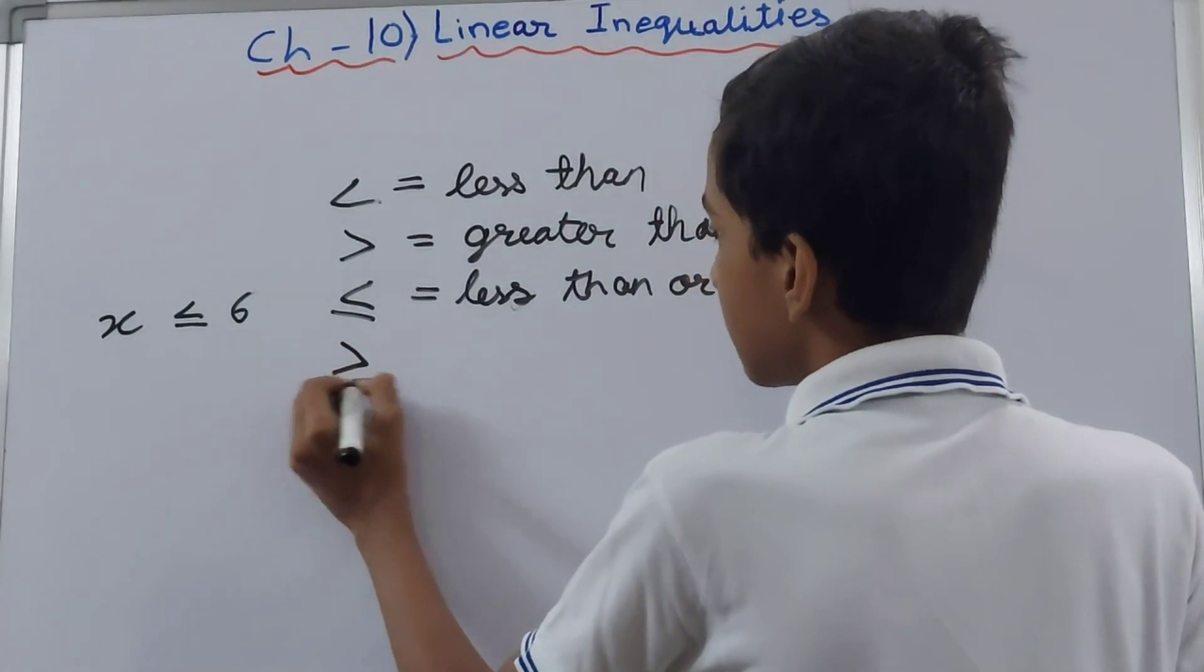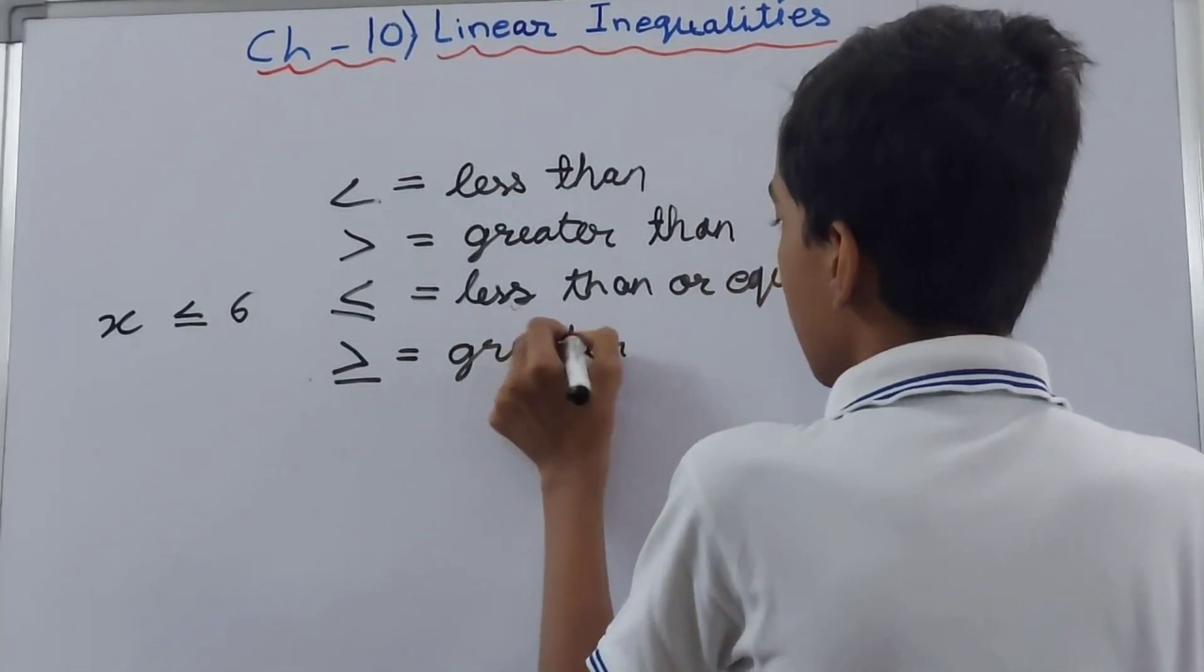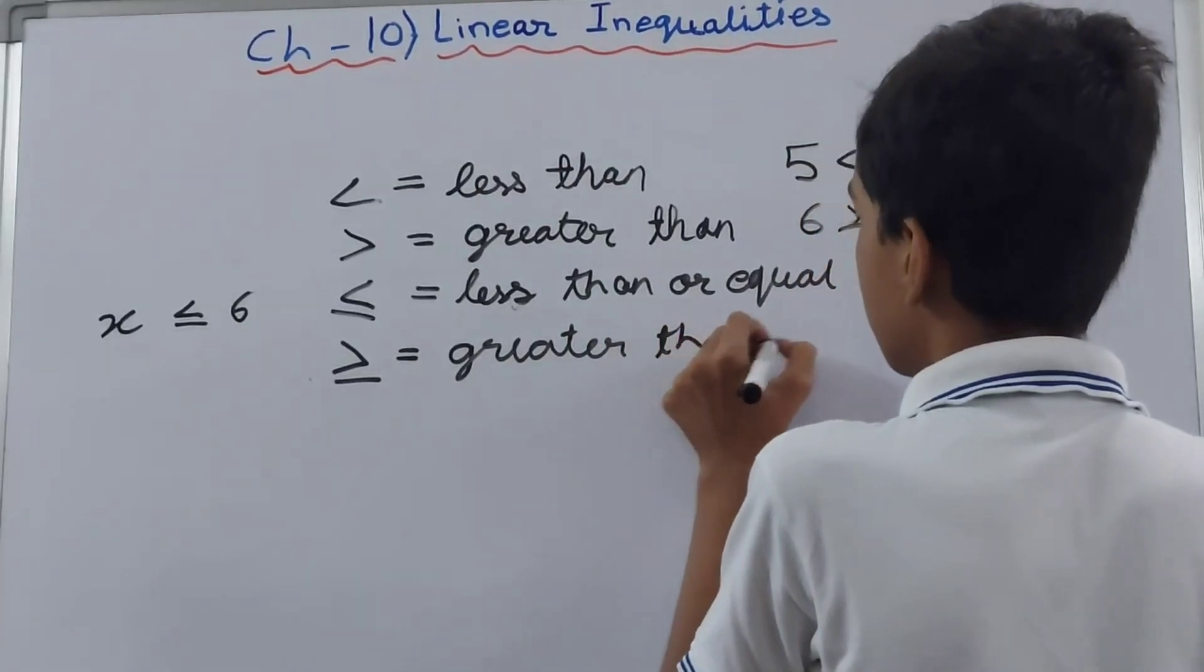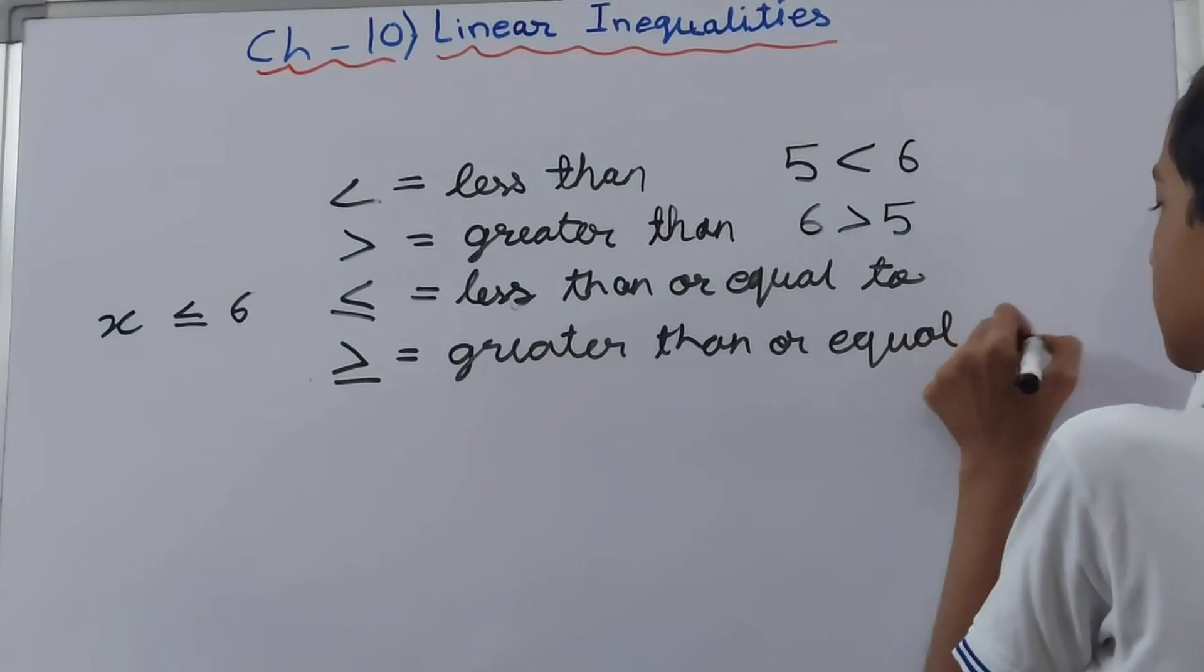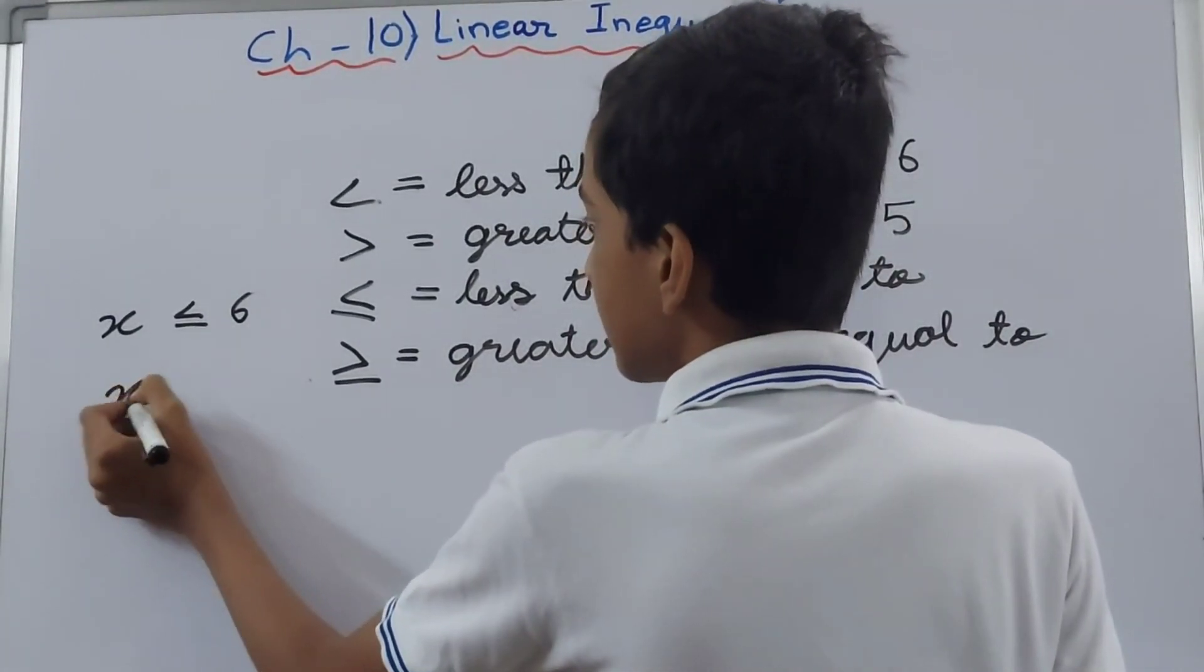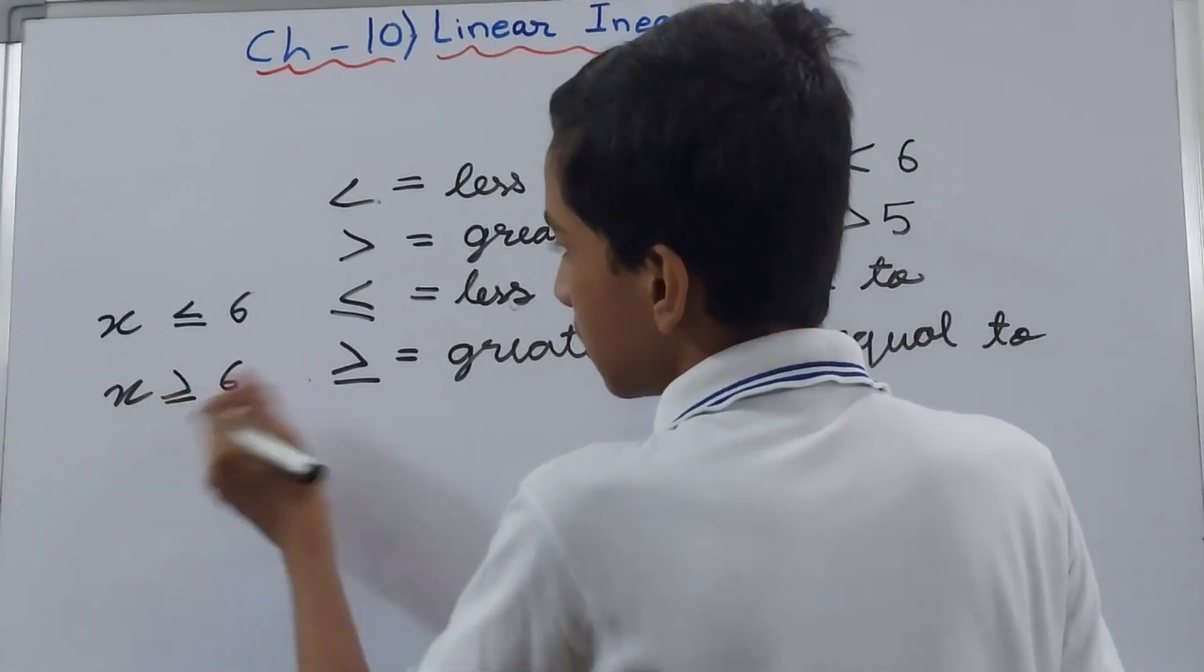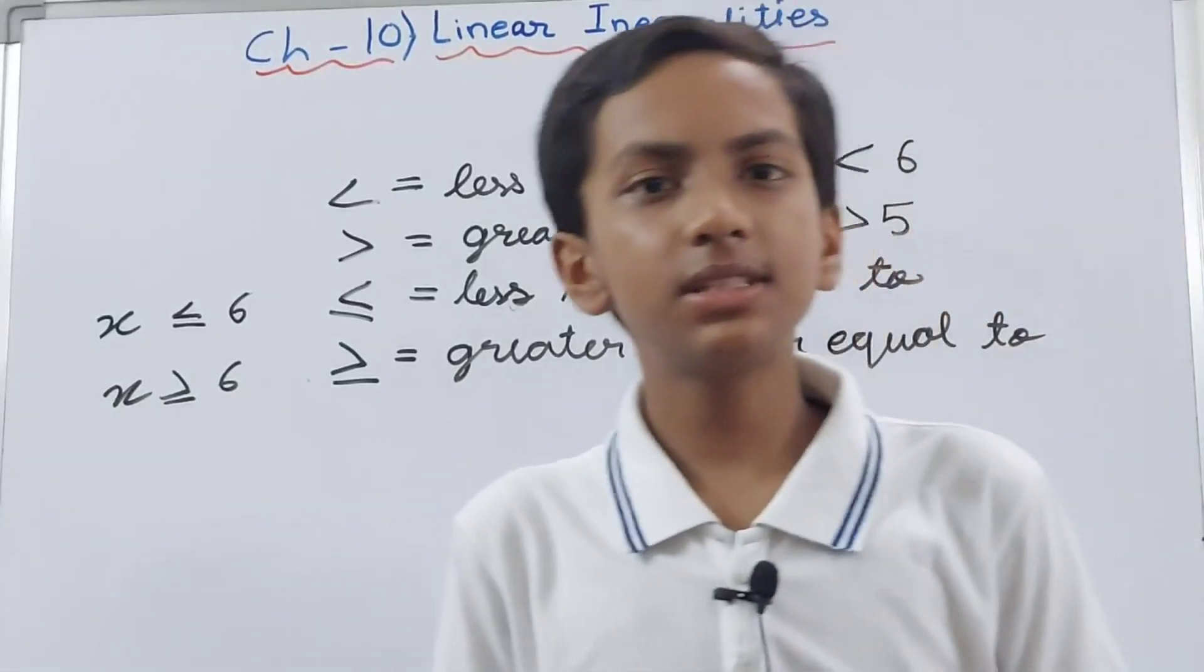Now we see the opposite of this. This means greater than or equal to. You can say that x is greater than 6 or equal to 6, simple as that.